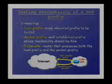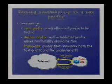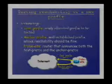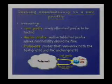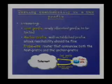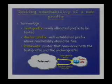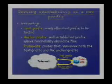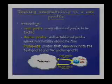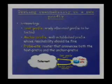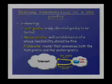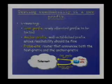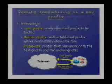How do we test reachability? First, let's define some terminology. There's a test prefix — obvious. There's an anchor prefix: a well-established prefix whose reachability should be fine, it's been there since 1948, and it seems to send and receive packets successfully. Both of those are announced from a test site. In fact, in all of the tests, they were announced from the same machine, behind the same routers, at the same site.